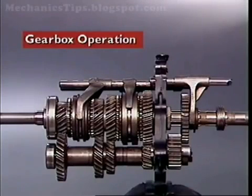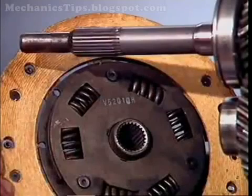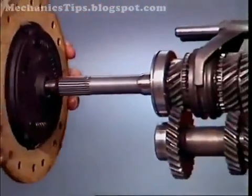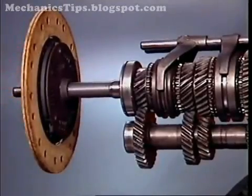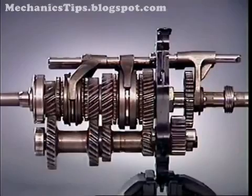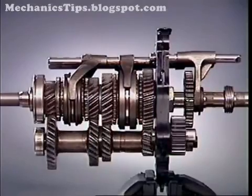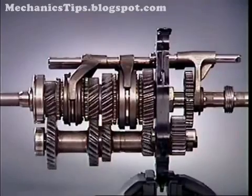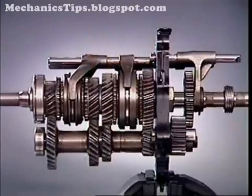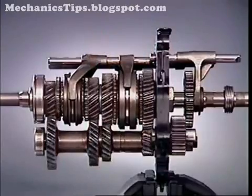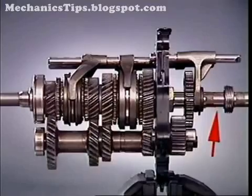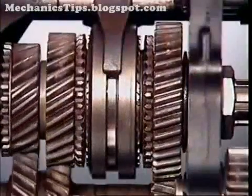This section examines gearbox operation in a rear-wheel drive manual transmission. The splines on the input shaft engage with the splines of the clutch driven plate. With engine rotation and the clutch engaged, the input shaft transfers its motion through the countershaft to rotate the gears on the main shaft. In this neutral condition, the engagement sleeves and hubs splined to the output shaft are stationary, and no drive is transmitted to the output.